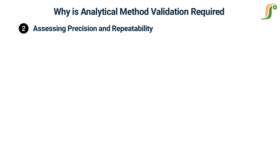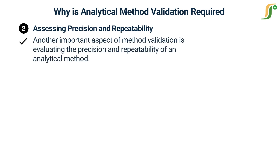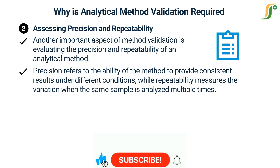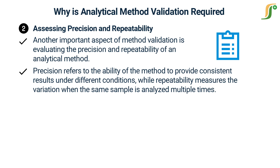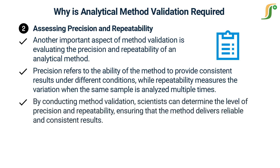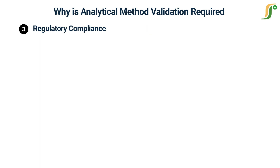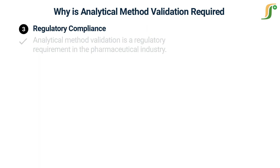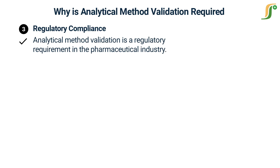Assessing precision and repeatability: another important aspect of method validation is evaluating the precision and repeatability of an analytical method. Precision refers to the ability of the method to provide consistent results under different conditions, while repeatability measures the variation when the same sample is analyzed multiple times. By conducting method validation, scientists can determine the level of precision and repeatability, ensuring that the method delivers reliable and consistent results.